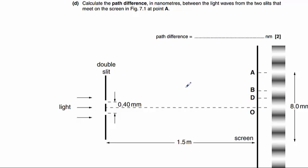Part D asks us to calculate the path difference in nanometres between the light waves from the two slits that meet on the screen. We know that the first dark fringe will occur at a path difference of 0.5 wavelengths. We know that the first bright fringe will occur at a path difference of 1 wavelength. And the second bright fringe then, which is A,